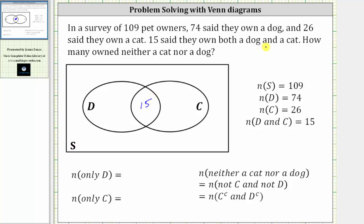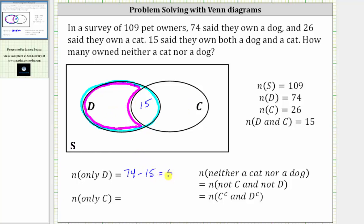Before we can answer the question, we need to determine the number of elements that are only in set D, as well as the number of elements only in set C. Because we know there are 74 elements in set D, 15 of which are also in C, the number of elements only in set D is equal to 74 minus 15, which is equal to 59. So there are 59 elements only in set D.